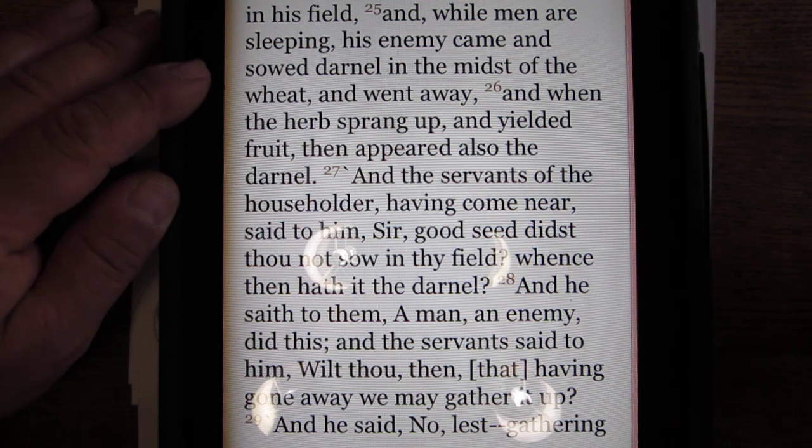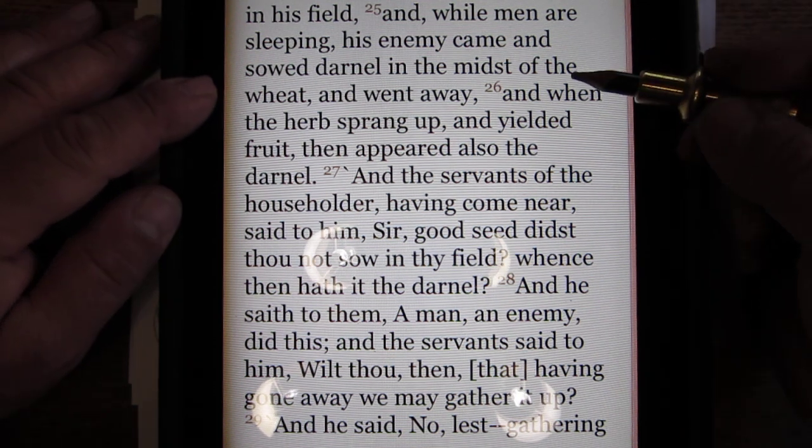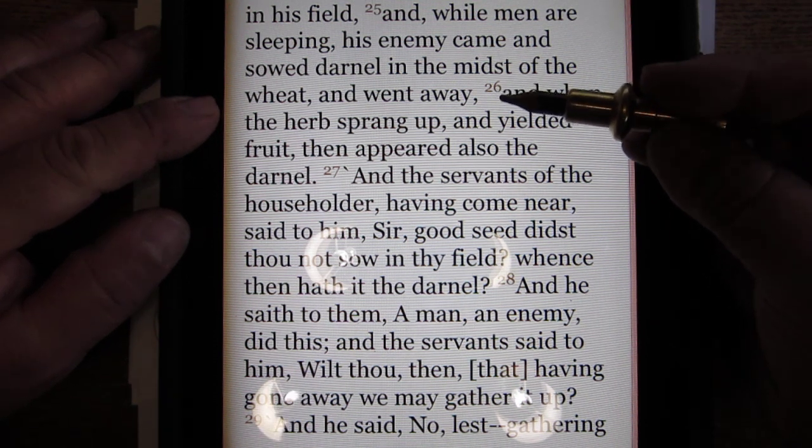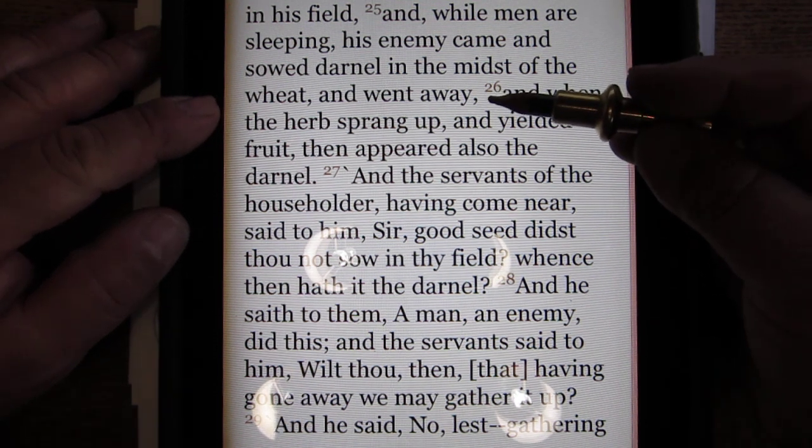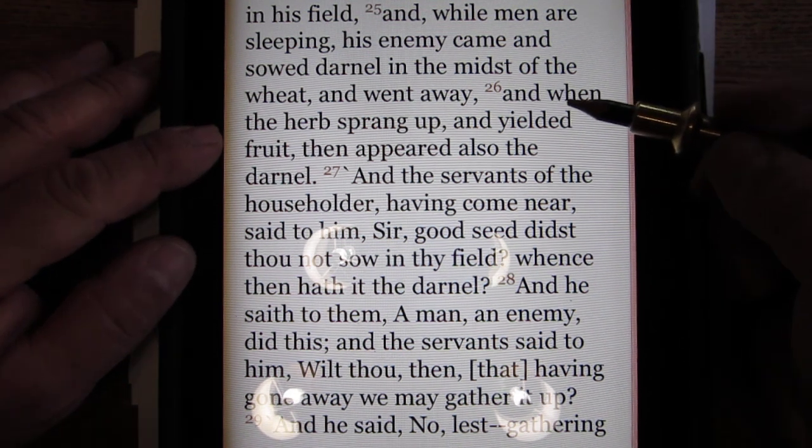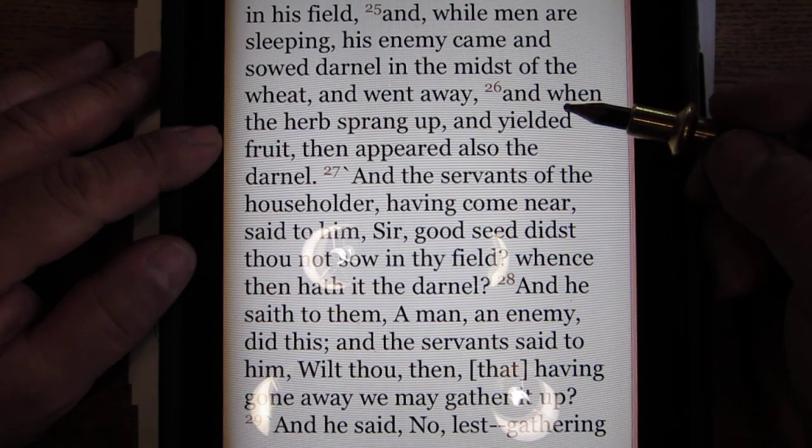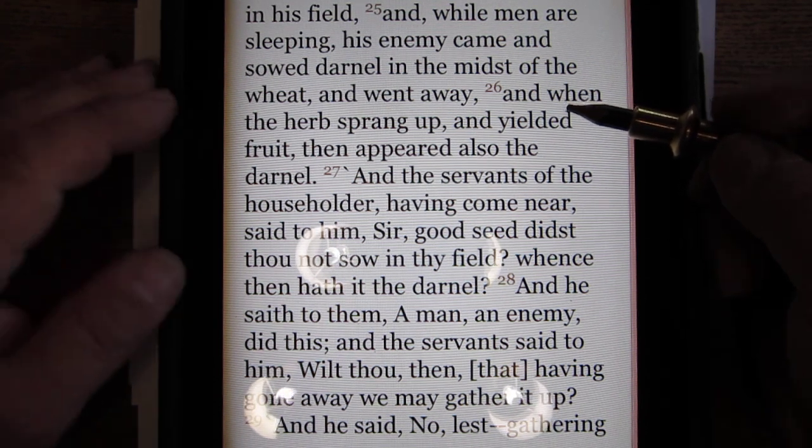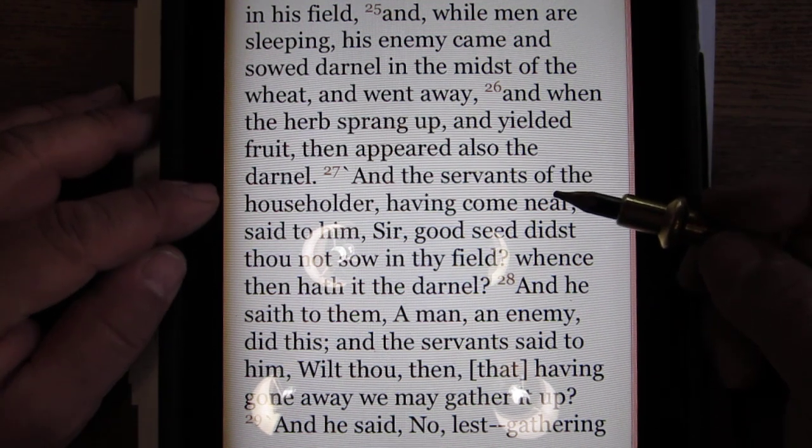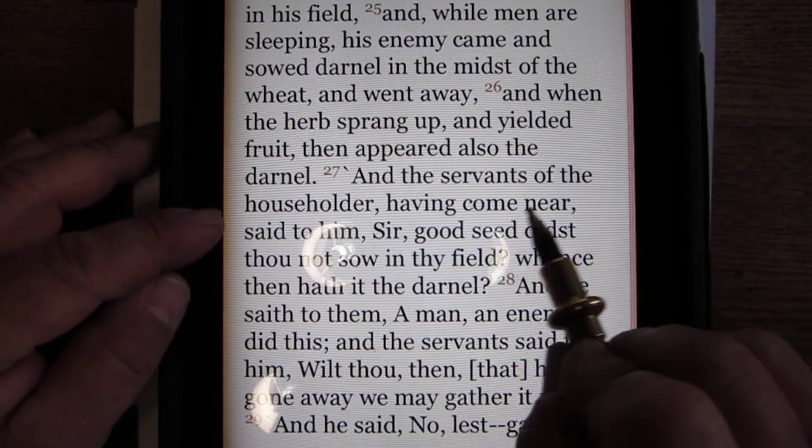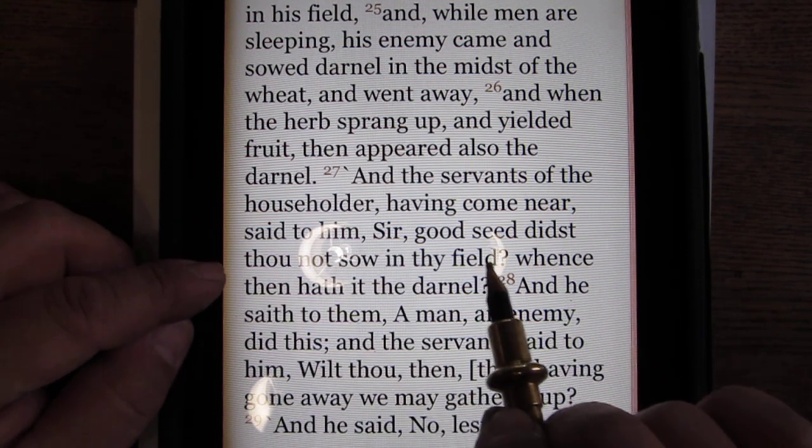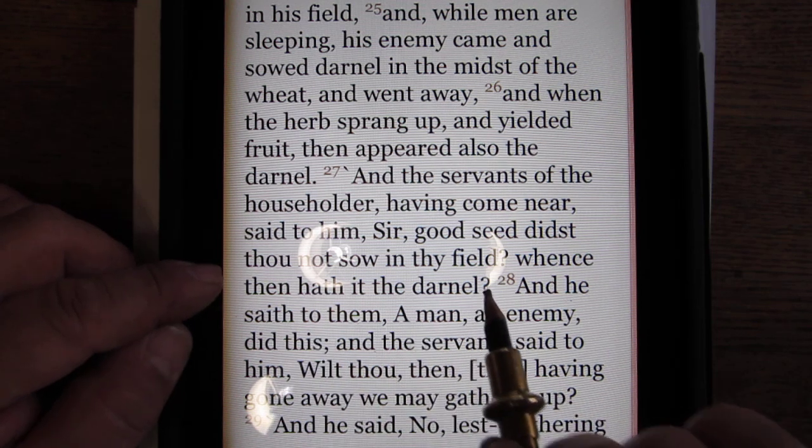And while men are asleep, his enemy came and sowed darnel in the midst of the wheat and went away. Enemy. Opposite. So, if you've got truth, the liars. And when the herb sprang up, and we know it's liars because darnel looks like wheat. And when the herb sprang up and yielded fruit, then appeared also the darnel.